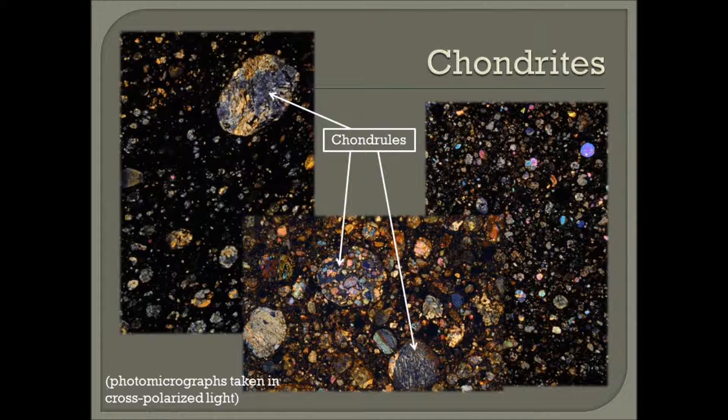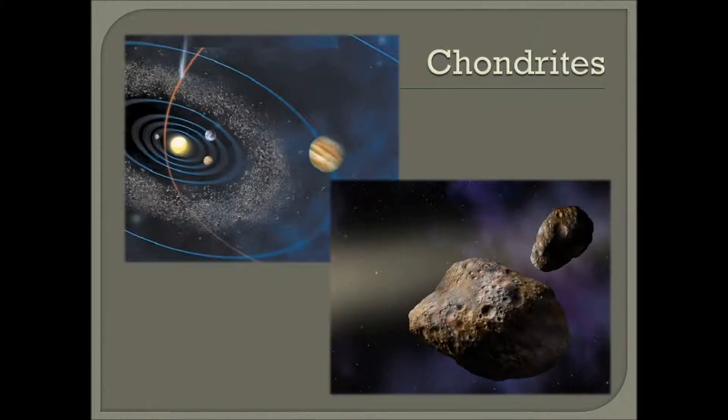Approximately 86% of meteorites currently in collections are chondrites. It is believed that chondrites are derived from asteroids and possibly comets that did not undergo planetary differentiation.